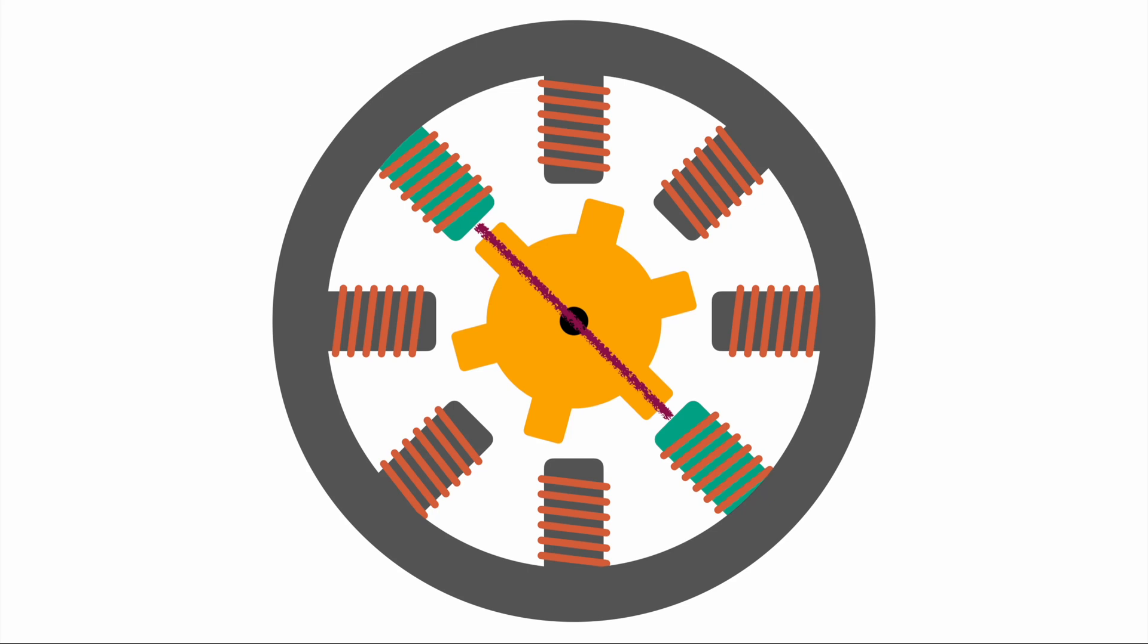Obviously in real world applications you would have much more complex versions of this with much more solenoids or much more tooth of the gear in the middle and so on. But I hope you understood the basic concept of a stepper motor and also a variable reluctance stepper motor by this example.